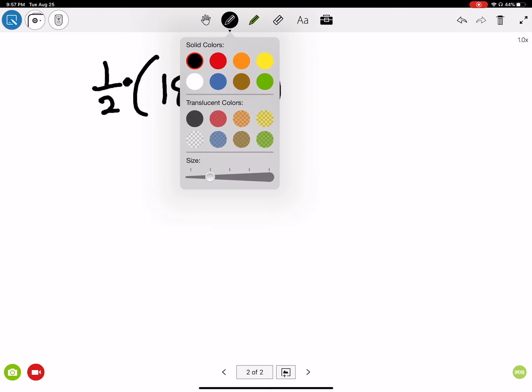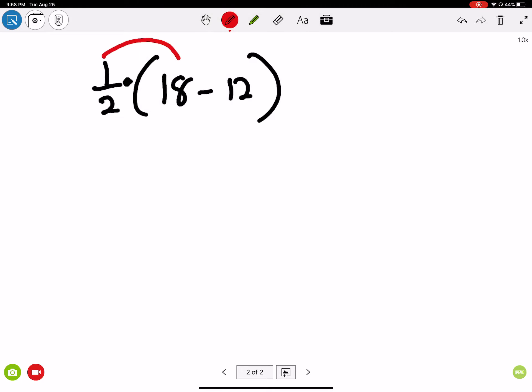So if I use the distributive property, which is what we're going to be doing, I'm going to distribute this 1 half to the 18, and the 1 half to the 12. Well, half of 18 is what? Good, it's 9. And then half of 12 is 6. And what was separating the 18 and the 12? Subtraction sign. And 9 minus 6 is 3. So the answer to this using the distributive property was 3.